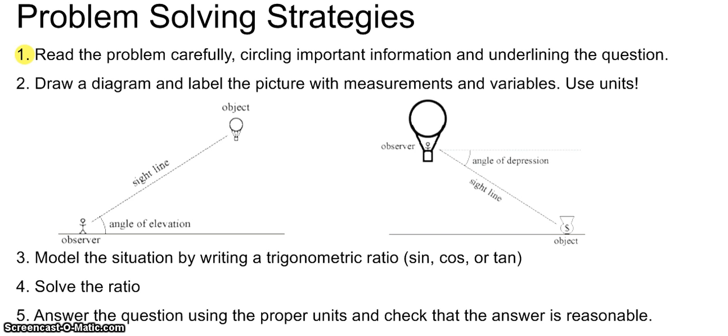Number one, read the problem carefully, circling important information and underlining the question. Oftentimes, students get these kinds of problems wrong because they don't understand what important information is given, such as lengths or angles, and oftentimes they don't even realize what the question is asking, and so they answer the wrong question.